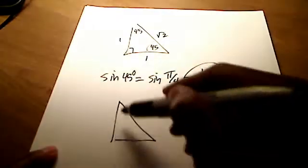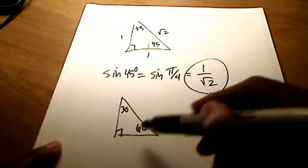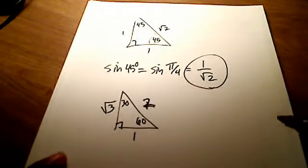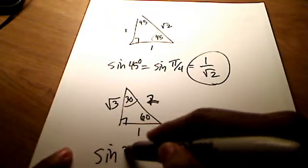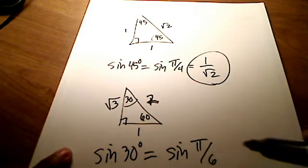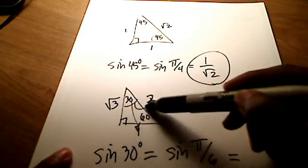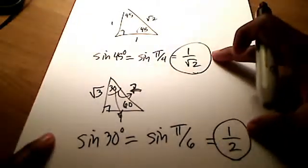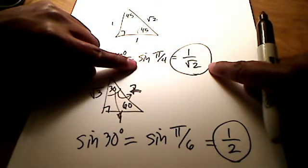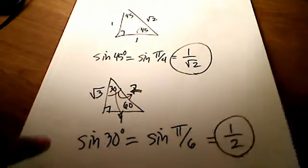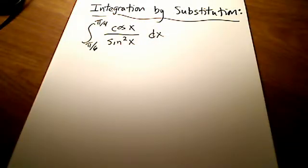Also recall that in a 30-60-90 triangle, it is set up this way. If you wanted the sine of 30 degrees, which in radians is sine of pi over 6, that's just opposite, which is 1, over hypotenuse, which is 2, so I have 1 half. So remember these two ratios: 1 over square root of 2 for sine of pi over 4, and 1 half for the sine of pi over 6. With that in mind, let's go ahead and use integration by substitution on this problem.